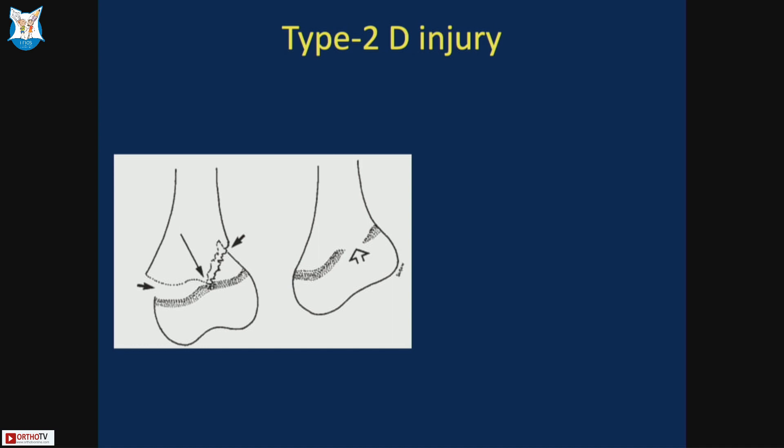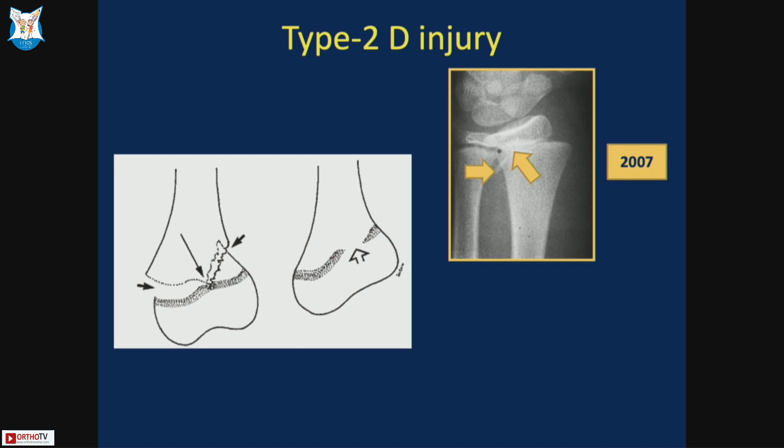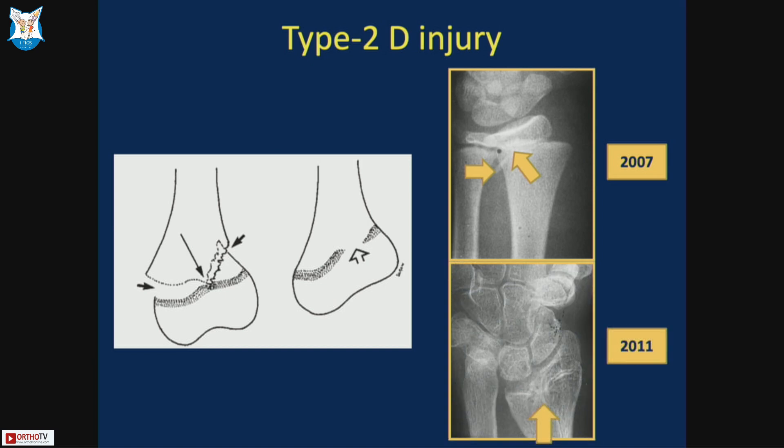Peterson described one more variant — the Type 2D injury — where a spike of the metaphysis can injure the growth plate, leading to growth arrest. A case from 2007 shows a simple-looking injury that on follow-up developed physeal bar formation, illustrating this Type 2D variant.